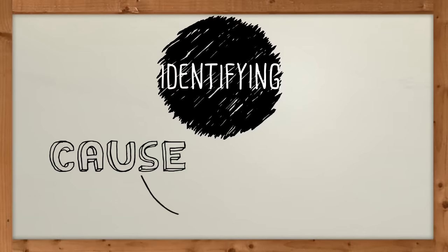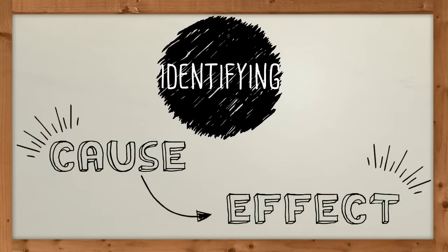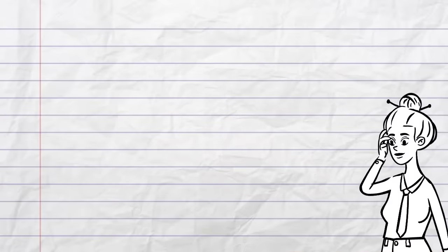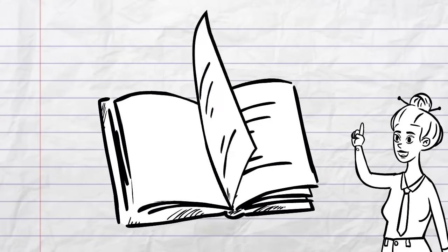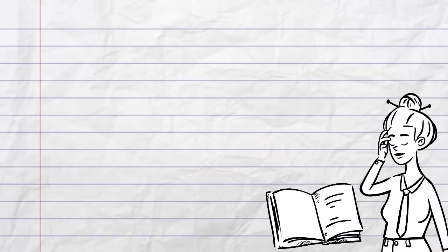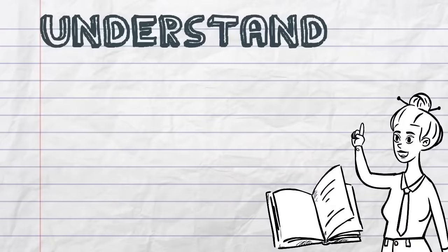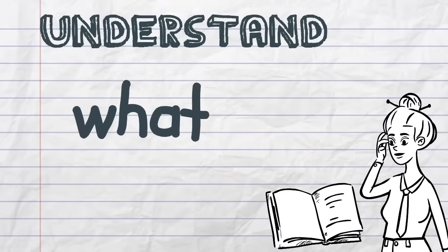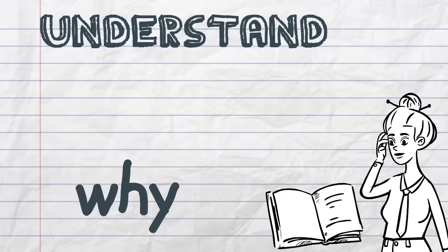Identifying Cause and Effect. Identifying cause and effect in texts is important as it helps us to understand the events that are happening. It helps us to understand what's happening and why it's happening.